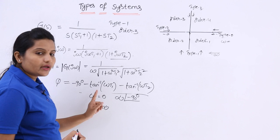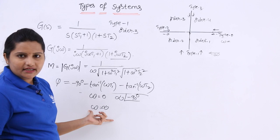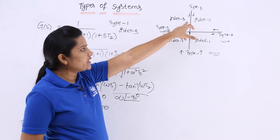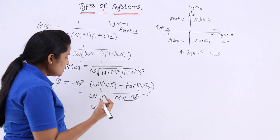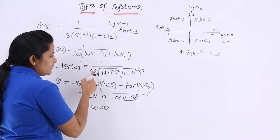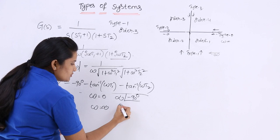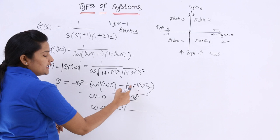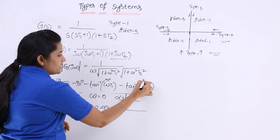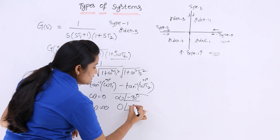When ω = ∞ (the ending point): since this is an order 3 system, it ends at −270°. The magnitude is 1/∞ = 0. The phase angle is −90° − tan⁻¹(∞) − tan⁻¹(∞) = −90° − 90° − 90° = −270°. So at ω = ∞, the magnitude is 0 and the phase angle is −270°.